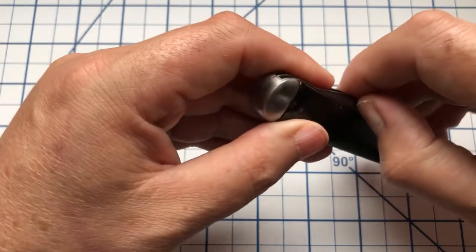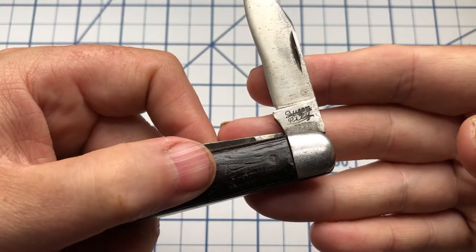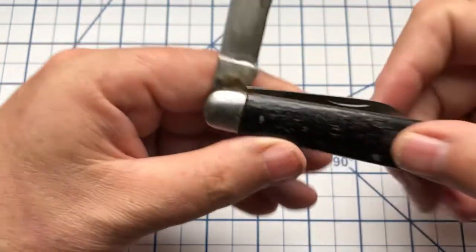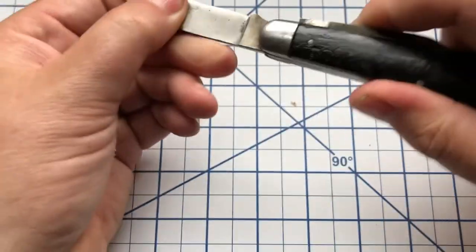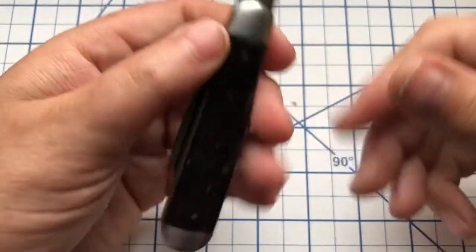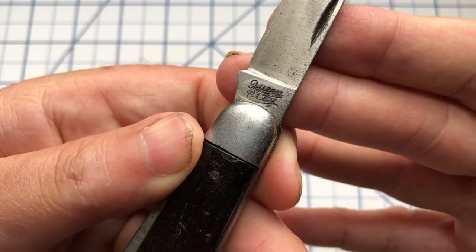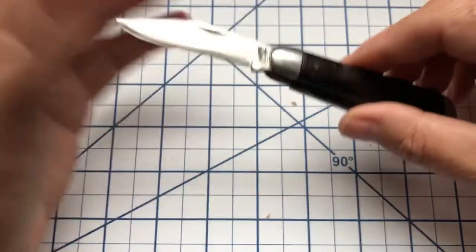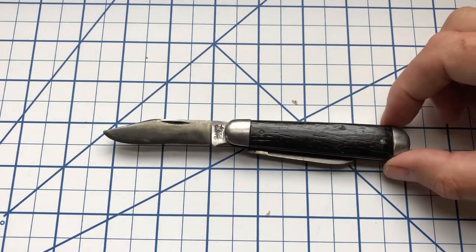But this knife is made by Queen. This is a Queen City number 10. And this Tang Stamp indicates that it was made somewhere between 1937 and 1945.